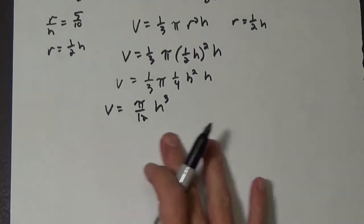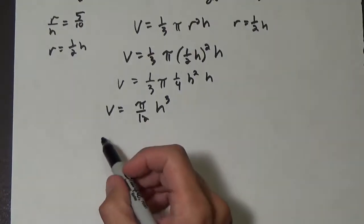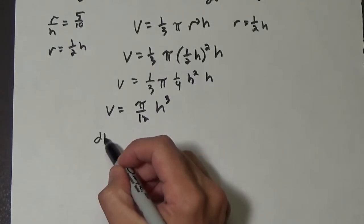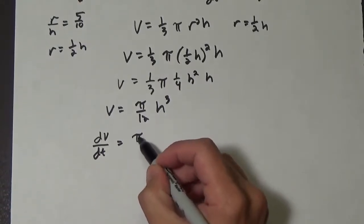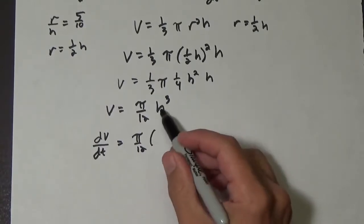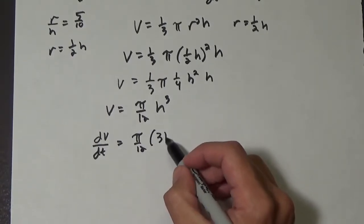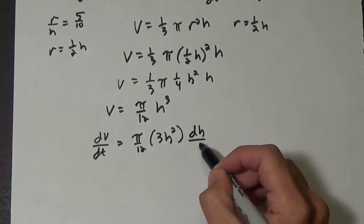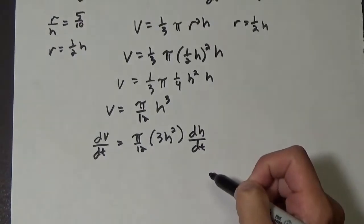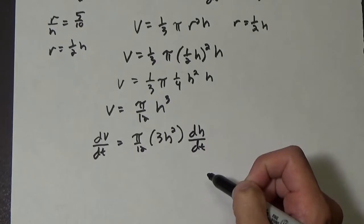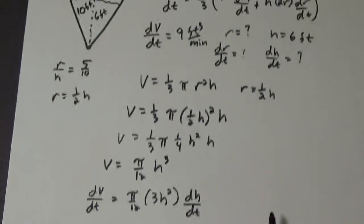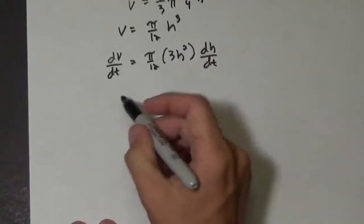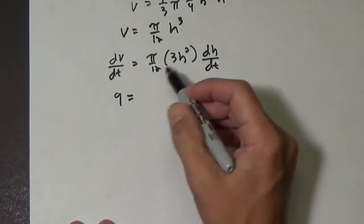So now we can take the derivative with respect to time. So our volume is going to be dv dt equals pi over 12, and then the derivative of h cubed is 3h squared dh dt. Okay, so let's see here. dv dt, we already figured that, that's 9.